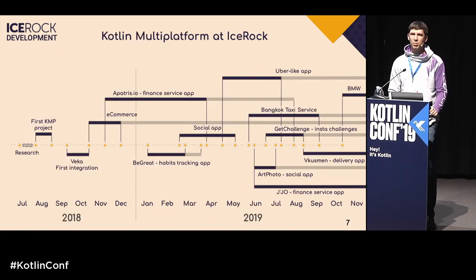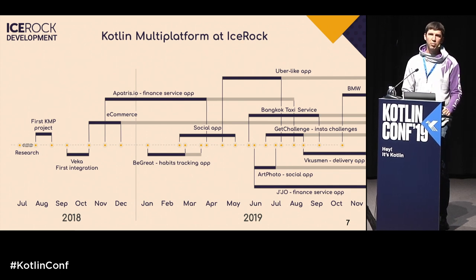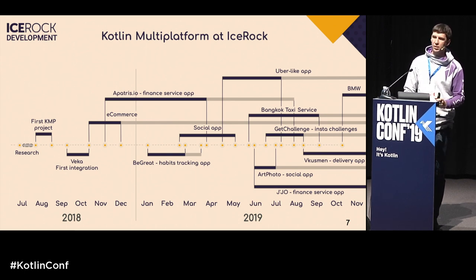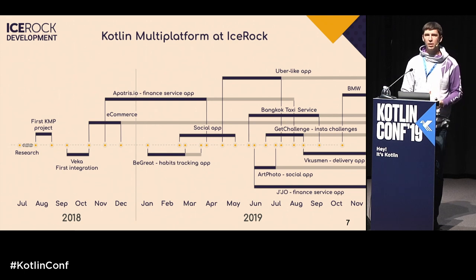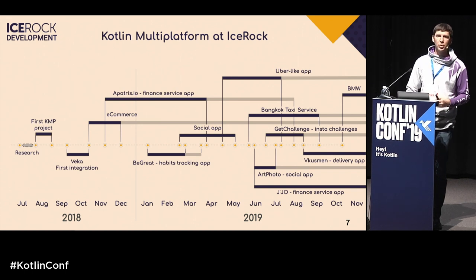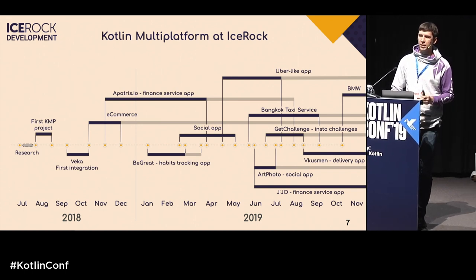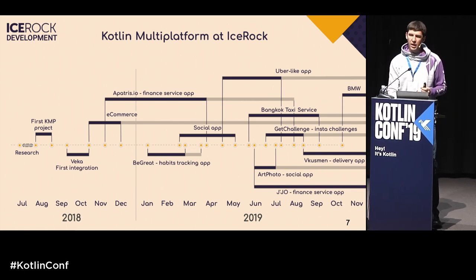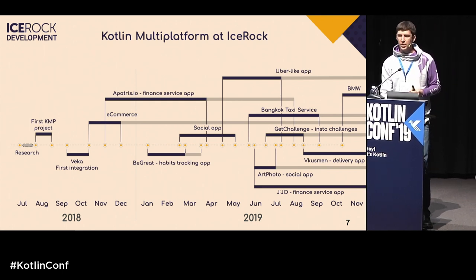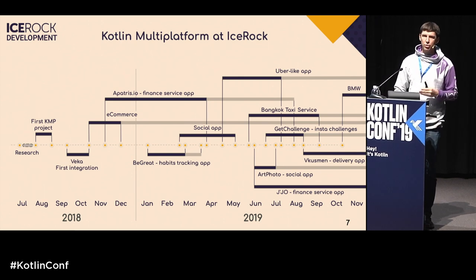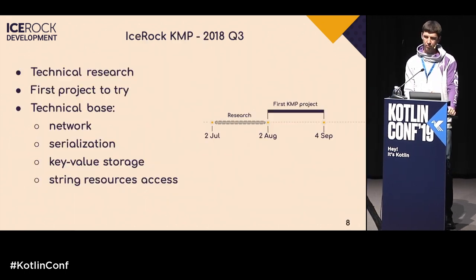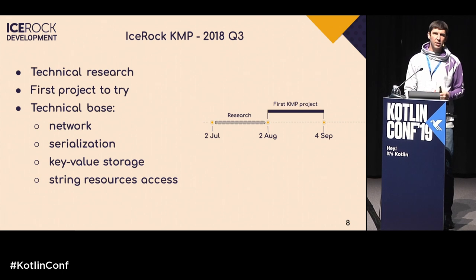This is our timeline for projects using Kotlin Multiplatform. As you can see, we started in 2018, and 2019 is the year of Kotlin Multiplatform in our company. We do everything with Kotlin Multiplatform now. The black line is active development time and gray is support time, and we have both big and small projects using this technology.